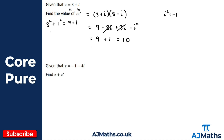So you can either expand it out fully or use the quicker method a squared plus b squared. You will find the quicker way easier as we work through more complex problems later, but it is important to understand how the cancellation works.